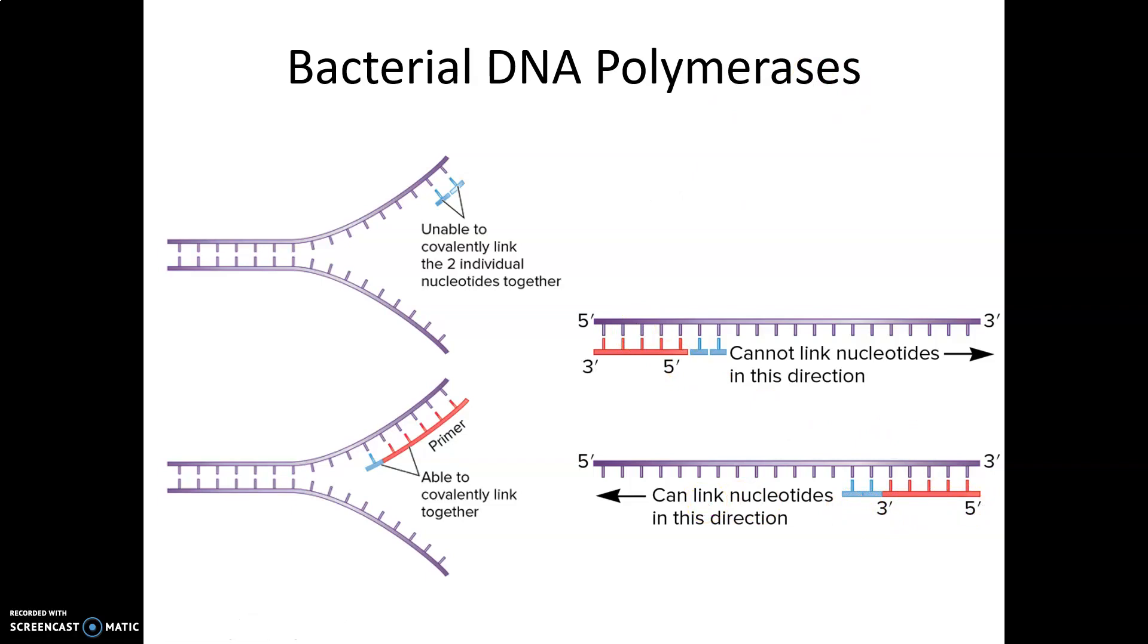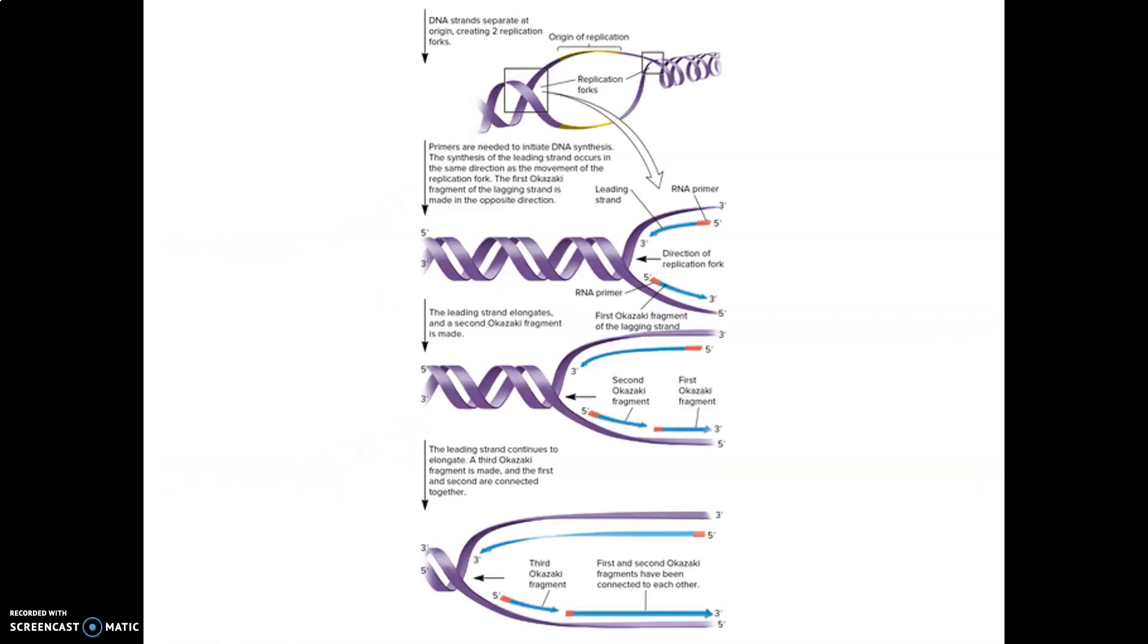On the leading strand, one primer and DNA polymerase does its job continuously. On the other side, since it's in the opposite direction, we have to keep laying primers and adding Okazaki fragments, so we can only do this in short sequences. The leading strand goes in the direction of the replication fork; the lagging strand goes away from it. Leading strand is continuous; lagging strand is discontinuous.